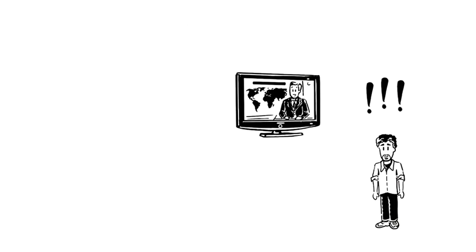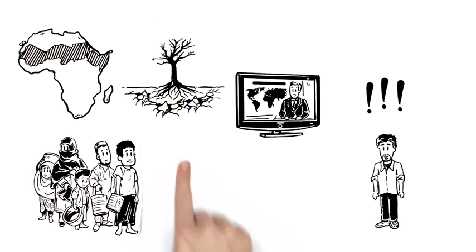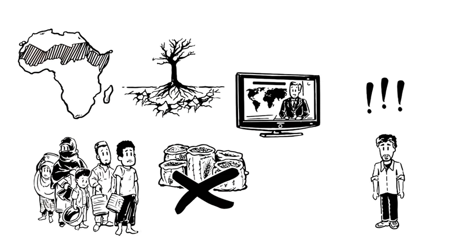But that's not all. The next report is about a famine in the Sahel. Because of a drought that lasted for months, the harvest has been exhausted and food is scarce.